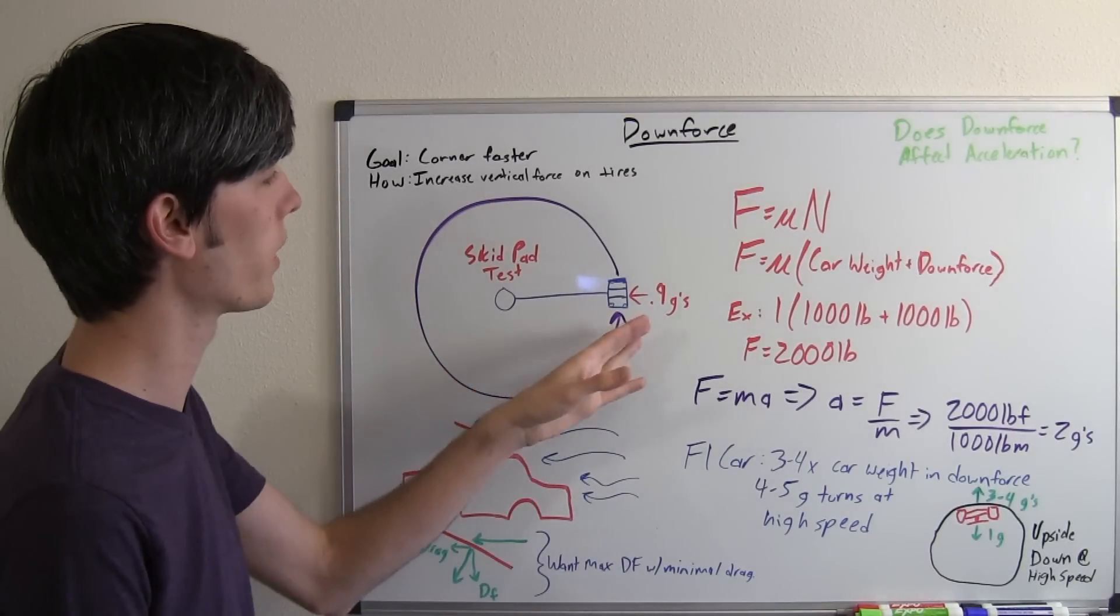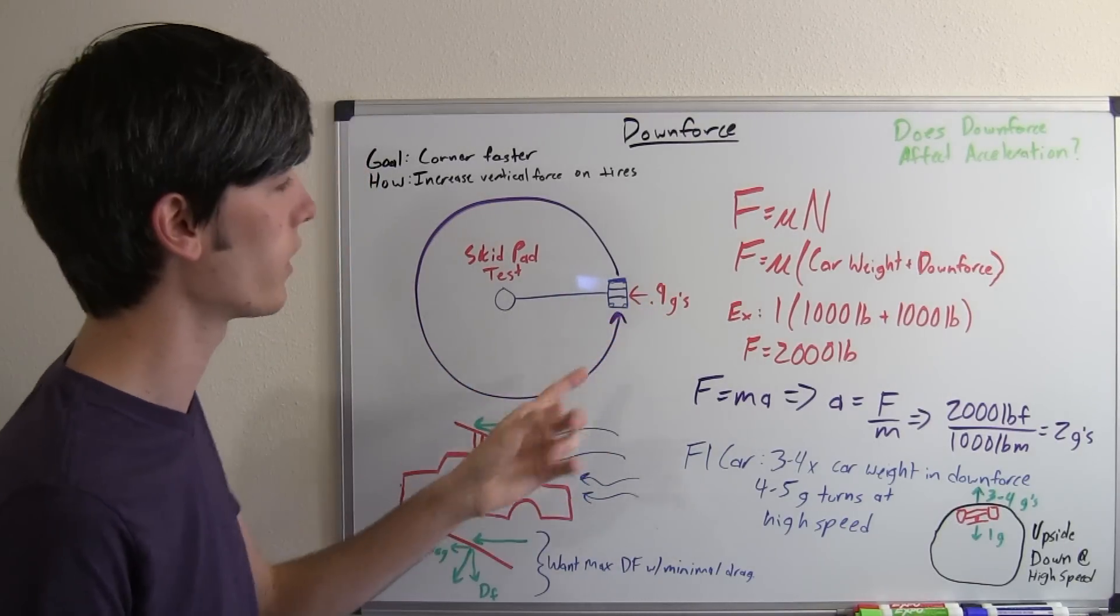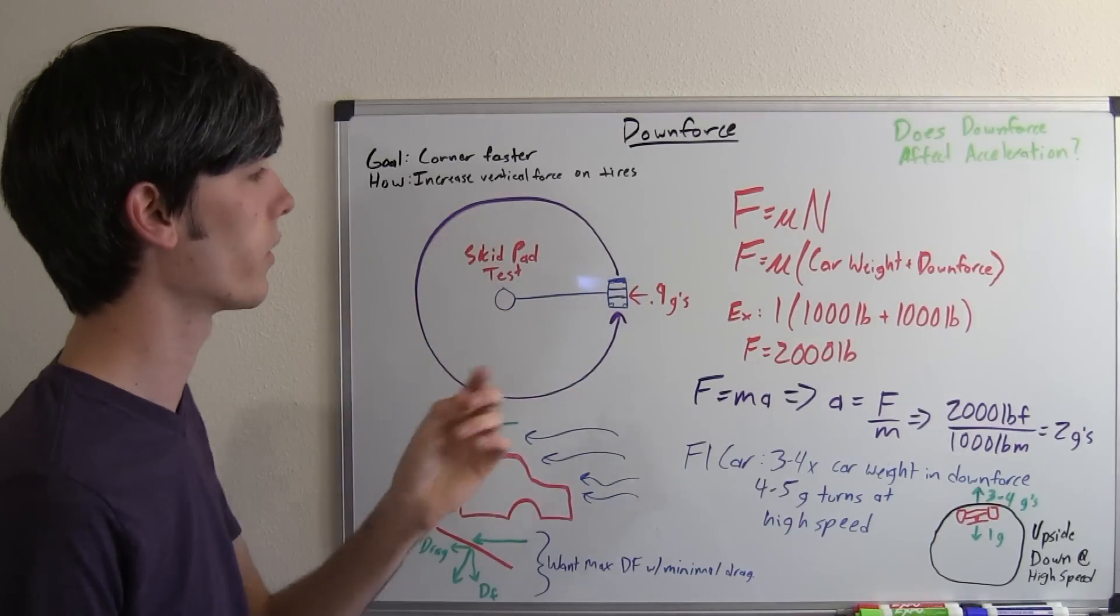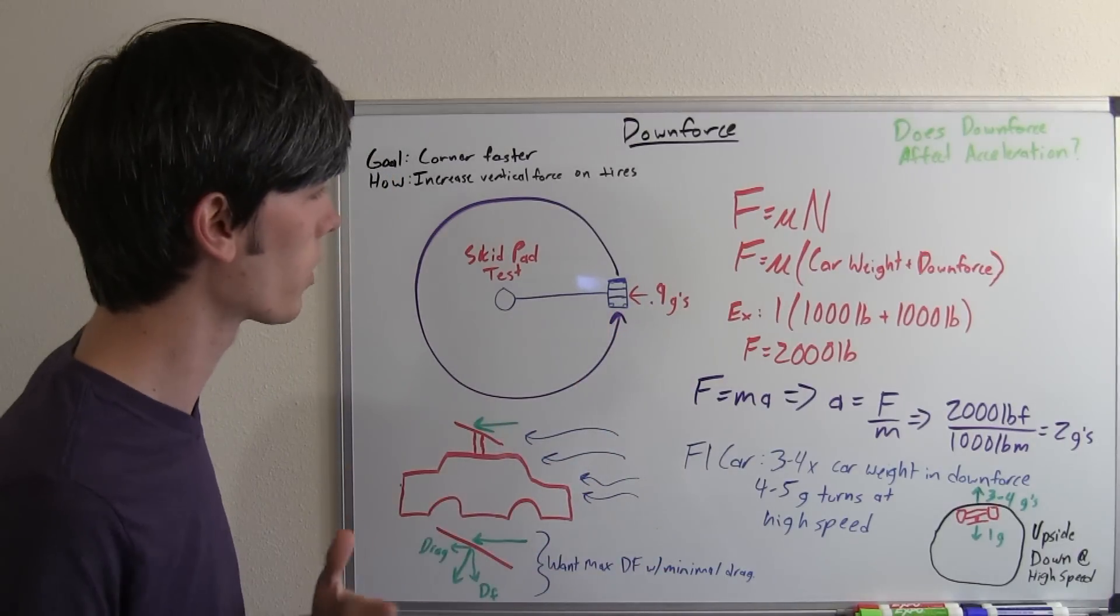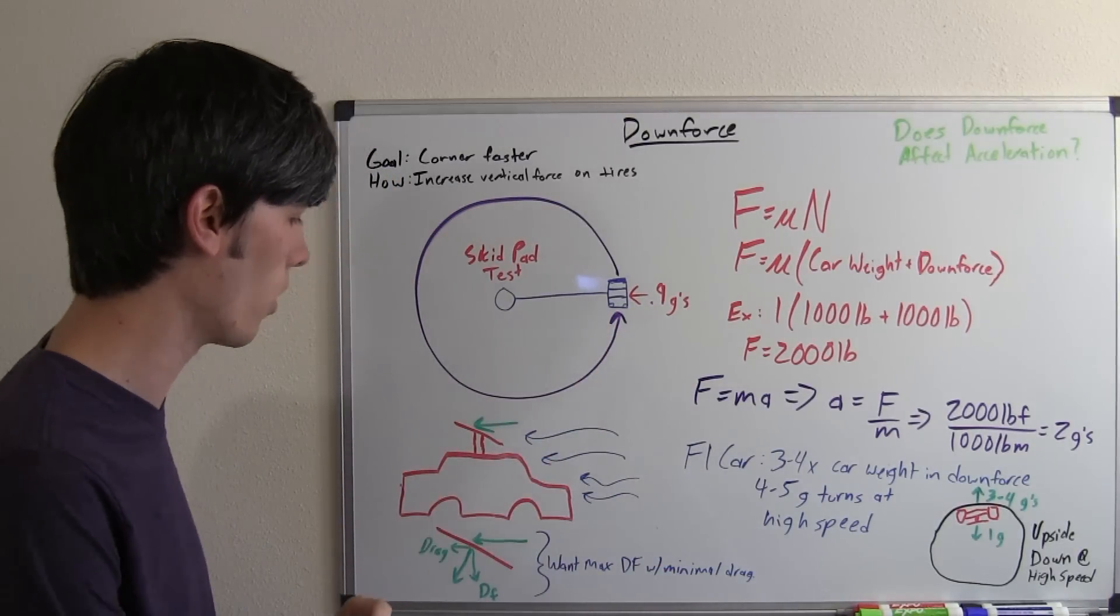Something kind of decent would be like 0.9 G's that a car can hold going around a corner. Now in order to increase that, you can either have stickier tires or you can increase the vertical force on that car.